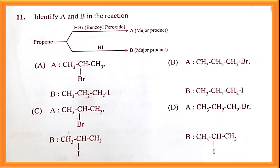Question number eleven: identify A and B in the reaction — propene treated with HBr in the presence of benzoyl peroxide. In the presence of peroxide, the negative part of the nucleophile goes to the carbon containing more hydrogen atoms — that is anti-Markovnikov addition. Without peroxide it is Markovnikov addition. Option D is the correct answer: A is anti-Markovnikov and B is Markovnikov.